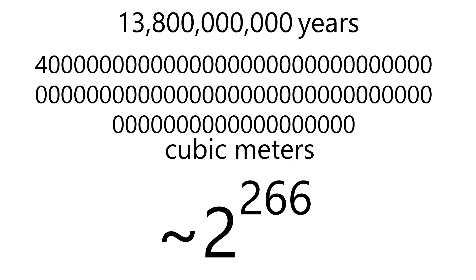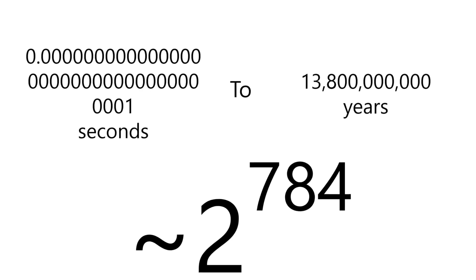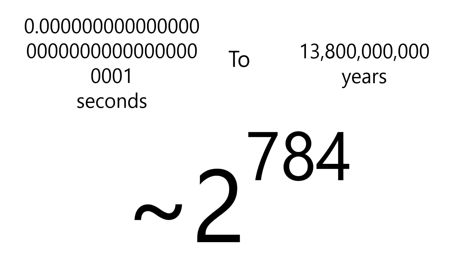If we add everything up, we find out that the number of doublings that the universe has gone through in terms of its volume is around 784 doublings.